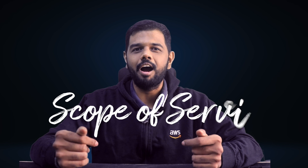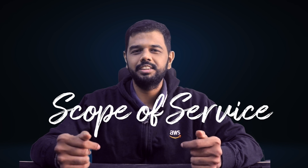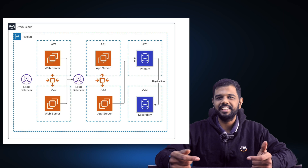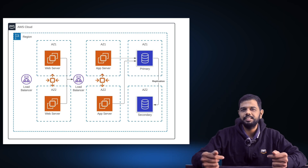The next thing to look at is whether the service is region-specific, availability-zone-specific, or a global service. This helps when designing architectural diagrams, so you understand exactly where the service fits in.